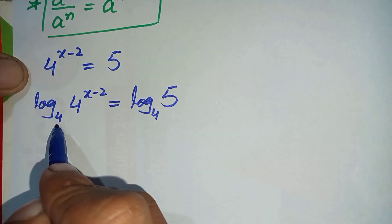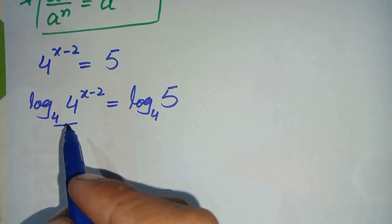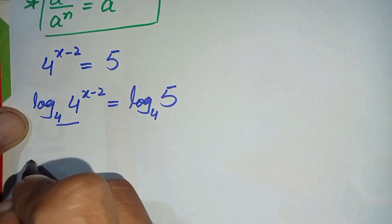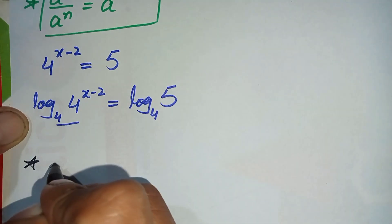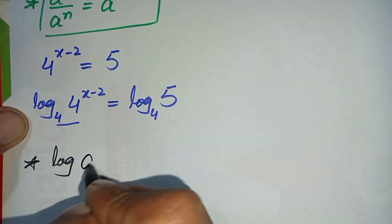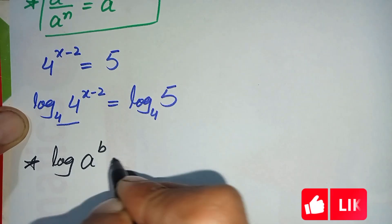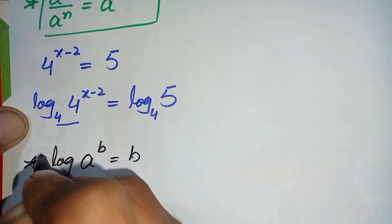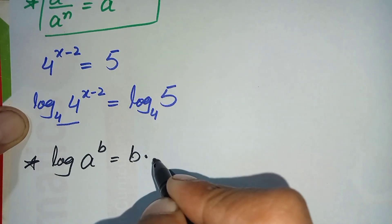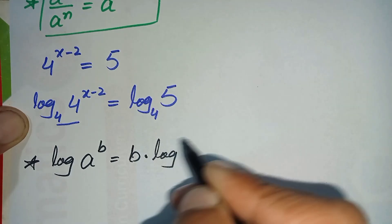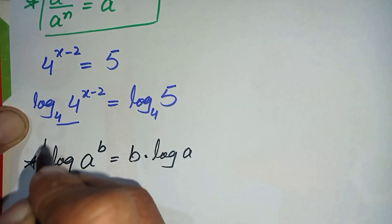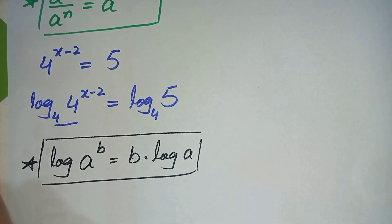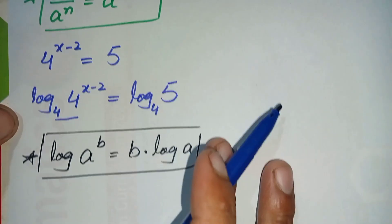On the left-hand side, we use the log power property: log of a raised to power b can be written as b times log of a. We shift the power to the front.